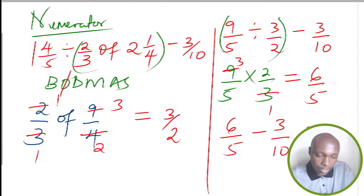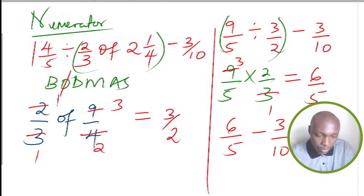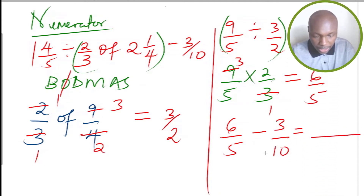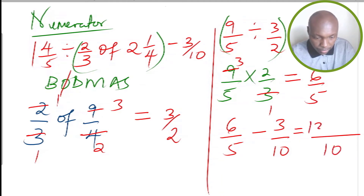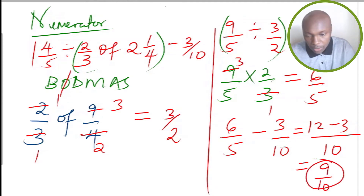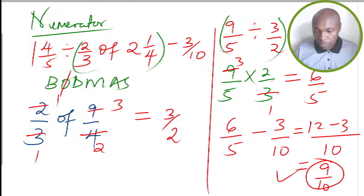Now we can subtract 3 over 10. We find the LCM of 5 and 10, which is 10. 10 divided by 5 is 2, multiplied by 6 gives 12. Subtract: 10 divided by 10 is 1, 1 times 3 is 3. So this gives 9 over 10. This is the solution for the numerator.